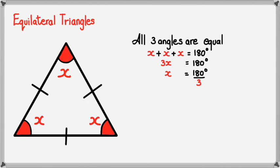...is equal to 180 divided by 3. x is equal to 60 degrees. And the reason we write for this, the geometric reason, is angles in an equilateral triangle, which equals 60 degrees.